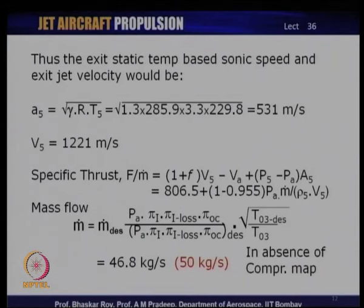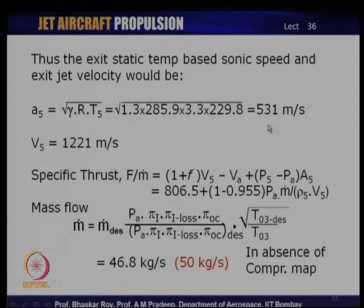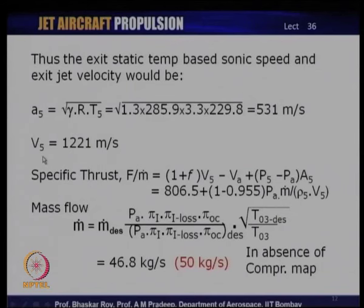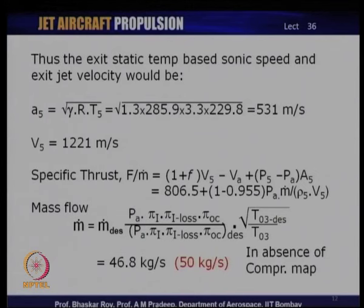Using the exhaust temperature, the sonic speed at the exhaust phase is computed using √(γ_gas · R_gas · T_5), giving 531 m/s. From the exhaust Mach number of 2.3, the exhaust jet velocity V_5 comes out to be 1221 m/s — the velocity with which flow is ejected from the engine to generate thrust.